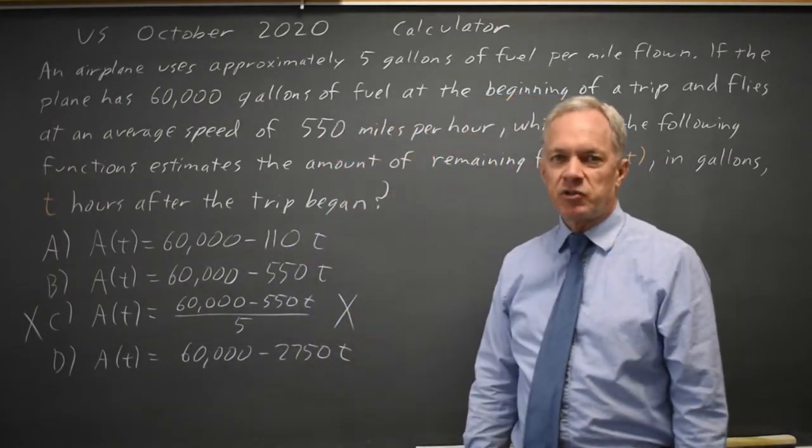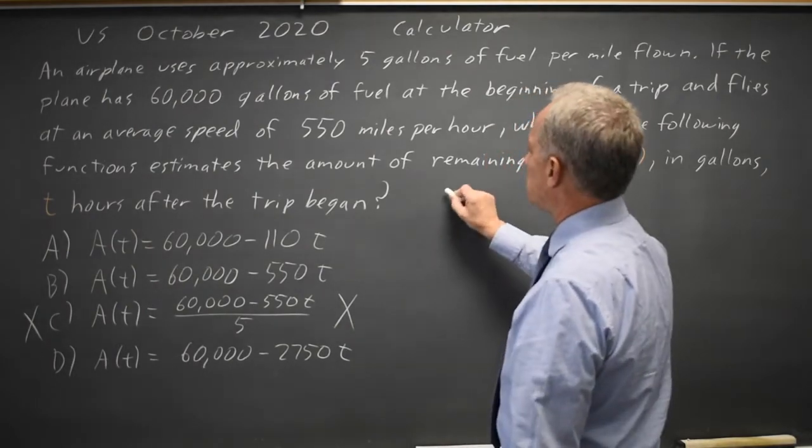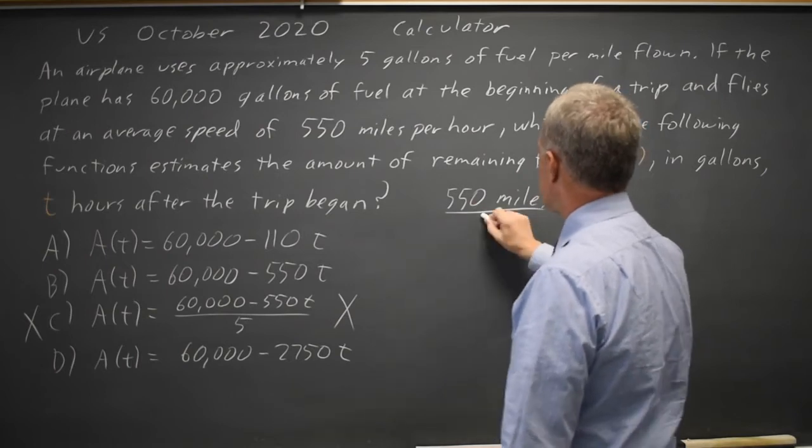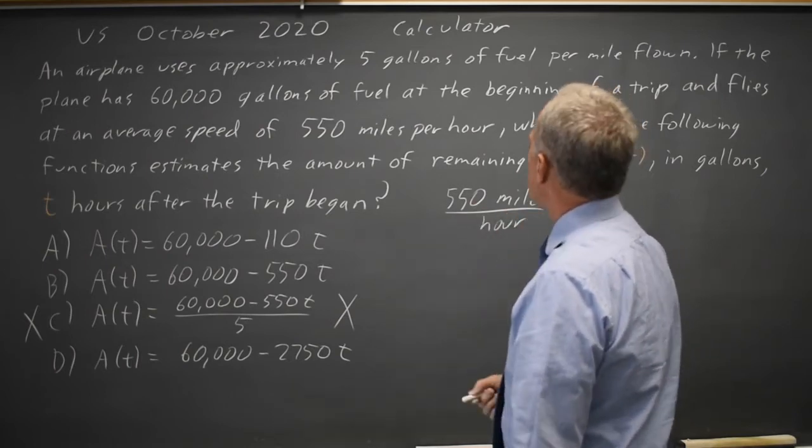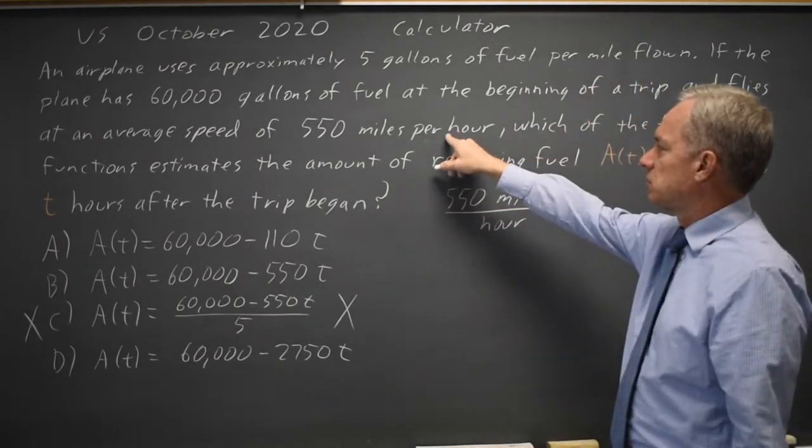Now the question is, how much fuel do we use per hour? We are traveling at 550 miles per hour. And per means divide by. So miles divided by hours, miles per hour.